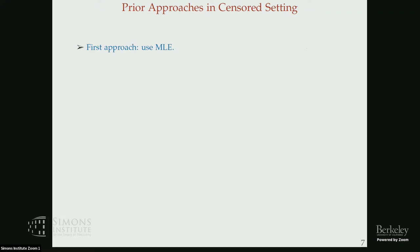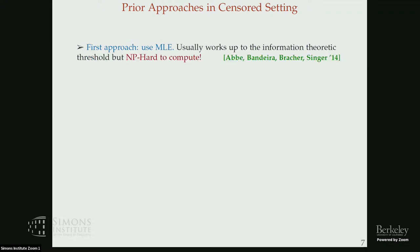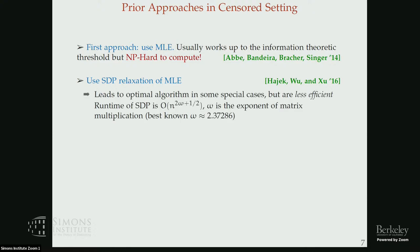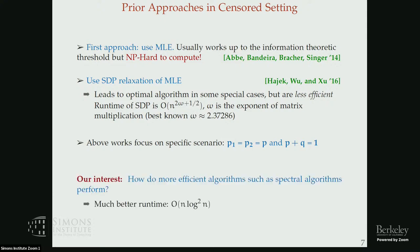A few approaches: maximum likelihood estimation builds optimal algorithms but is NP-hard to compute for this problem. A natural approach is SDP relaxation of the MLE. A paper by Hajek, Wu, and Xu shows SDP algorithms can be optimal in some regimes; however, SDPs are not as efficient. Prior works also require conditions like equal edge densities and p + q = 1. Our interest is in how more efficient algorithms — specifically spectral algorithms — perform in the censored setup.